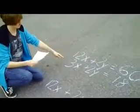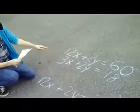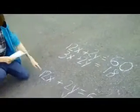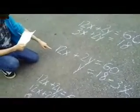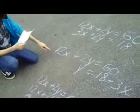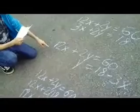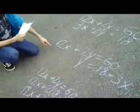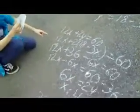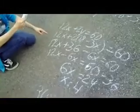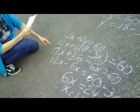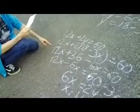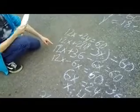Given the system below, solve for x. In order to figure out what x is, solve the second equation for y in terms of x by subtracting 3x from both sides of the equal side. Since the second equation is now equal to y, substitute 18 minus 3x in for y in the first equation.